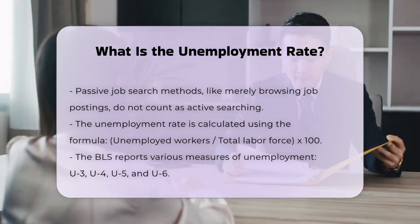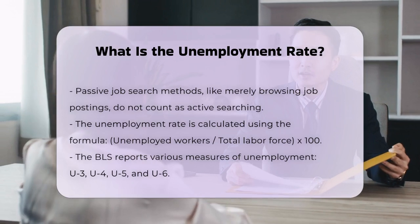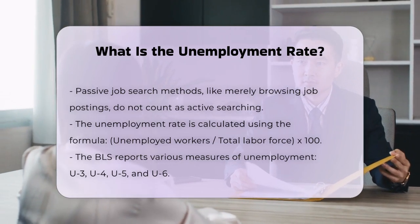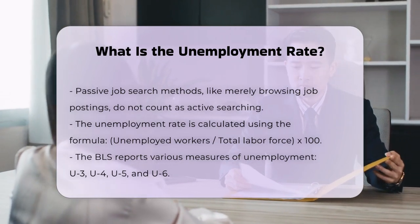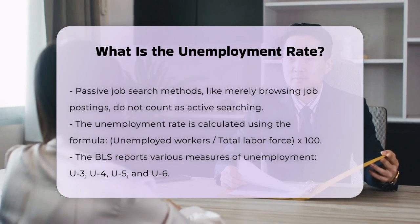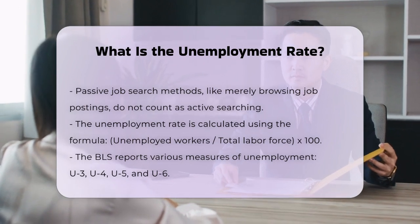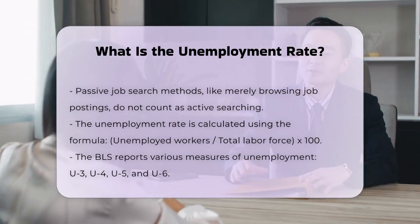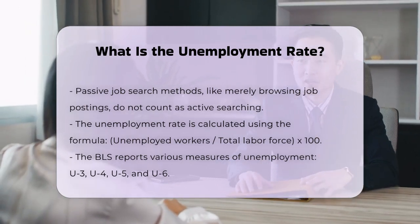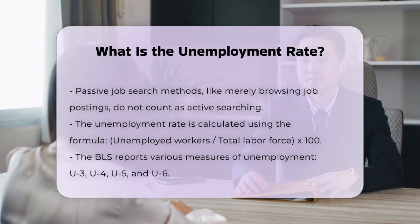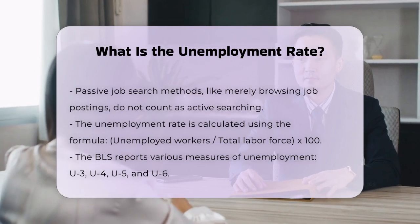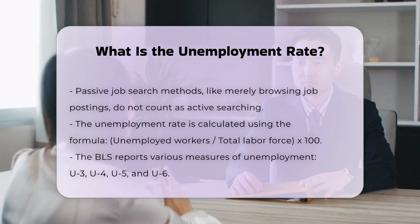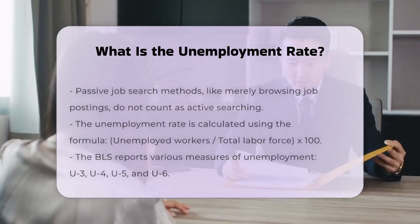U4 adds discouraged workers to the U3 rate. U5 includes marginally attached workers in addition to those in U4. U6 is the broadest measure, including people working part-time for economic reasons and those marginally attached to the labor force.